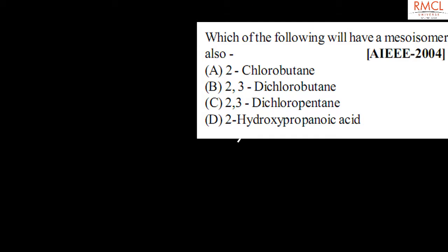The given question asked in AIEEE 2004 is: which of the following will have a meso isomer? For this, option B is correct because 2,3-dichlorobutane is a meso compound.